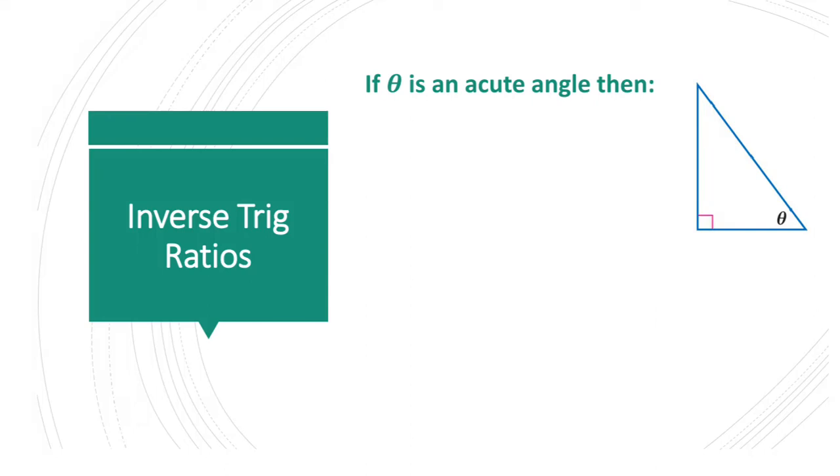So inverse trig ratios, which means we can use or find the angle measure now versus the side length. Inverse implies that we're going to find the angle measure.